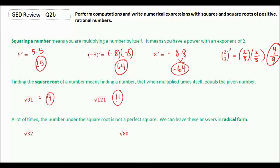81 and 121 are examples of perfect squares because when you take the square root you get a nice whole number. If we start from the beginning, our perfect squares would be: 1 squared is 1, 2 squared is 4, 3 squared is 9, 4 squared is 16, 5 squared is 25, and so on.